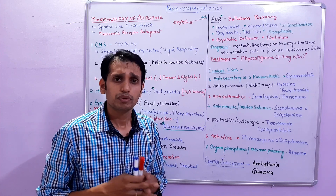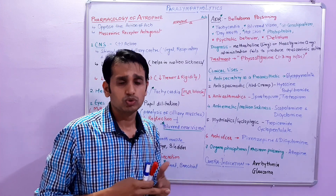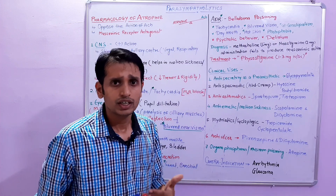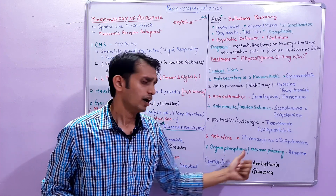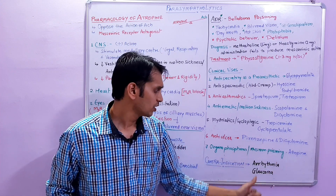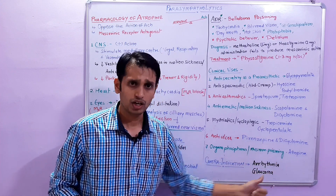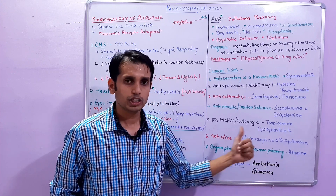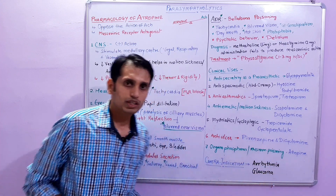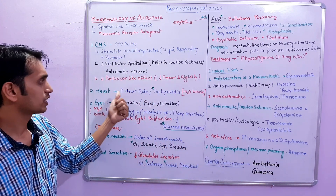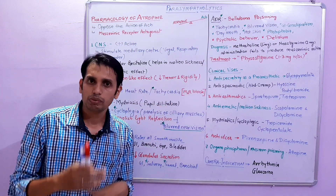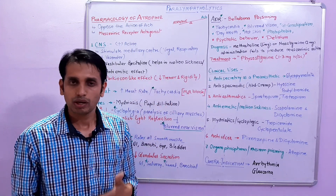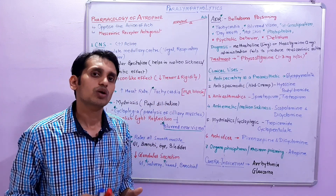Now come to the contraindications — conditions where we do not give these drugs. First is arrhythmia, specifically tachyarrhythmia, and second is glaucoma. In arrhythmia producing conditions, atropine can be used against bradyarrhythmia, but in tachyarrhythmia cases, atropine class drugs are not used.